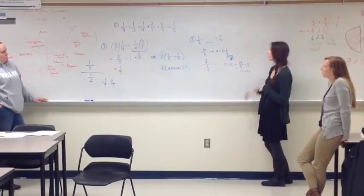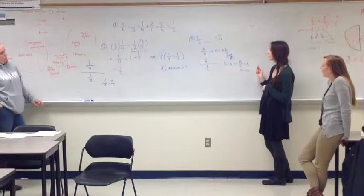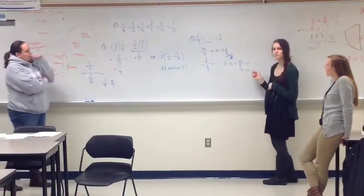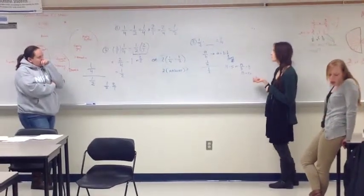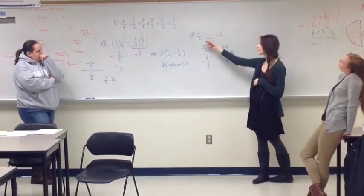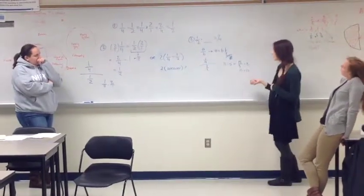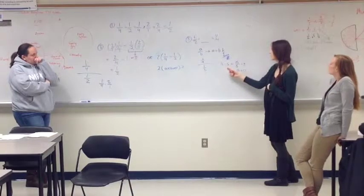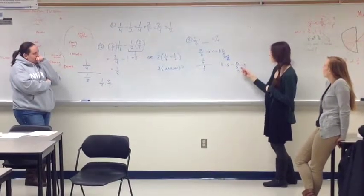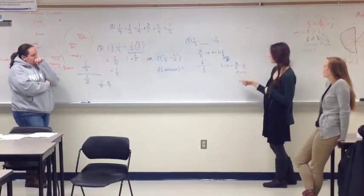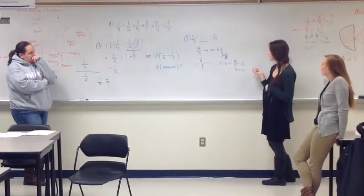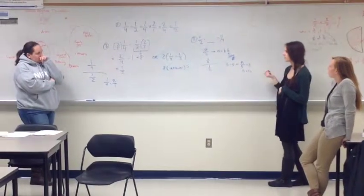And then our third way of thinking about it was if we rewrote it, so it would be a multiplication problem. So one-fourth is one-half times what, and you'd be solving for the other piece. Like, if you had 15 divided by 5, and then you multiply both sides by 5, then it's 15 equals 5 times x. So you're solving for the missing piece.